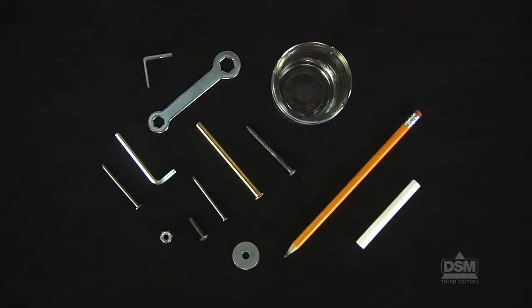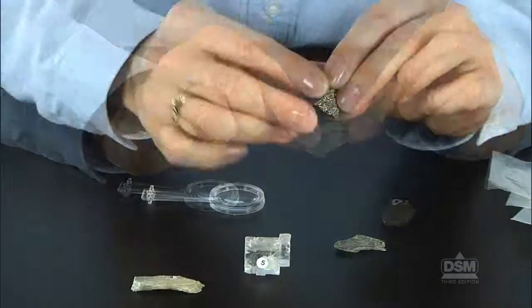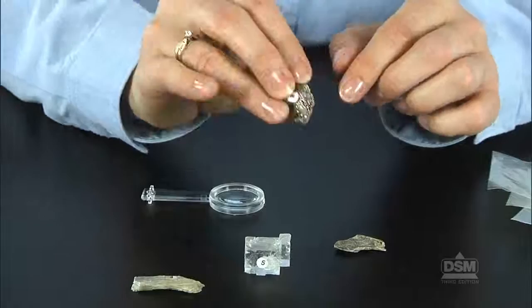Show students the items you have collected to illustrate metallic and non-metallic luster and pass them around for all to examine. Instruct students to remove mineral specimens three, five, six, and eight from their storage containers and examine them as well.